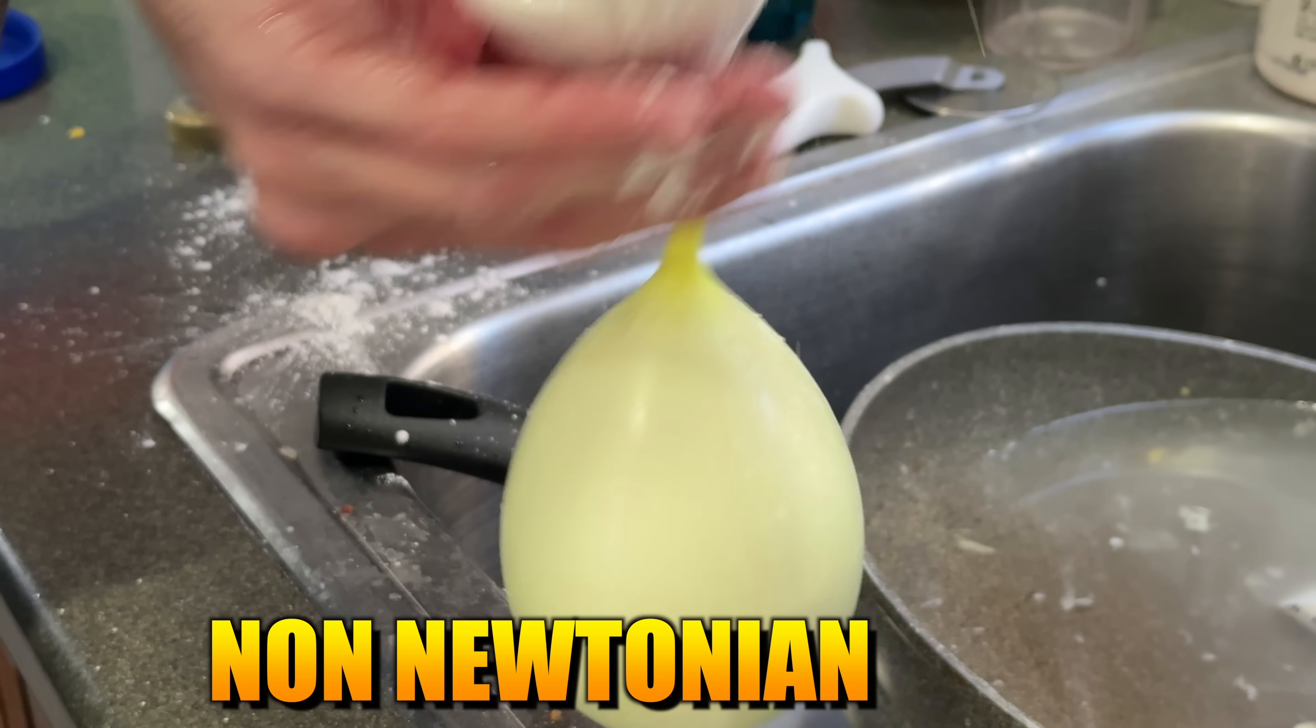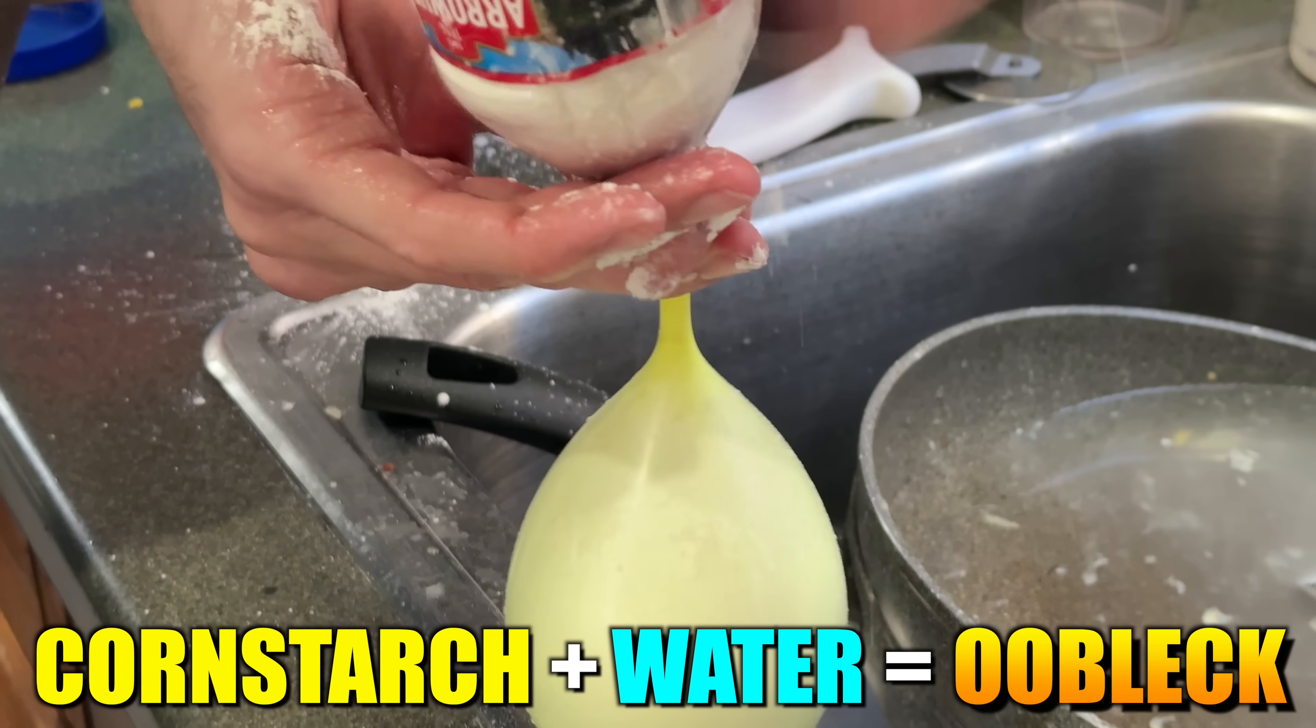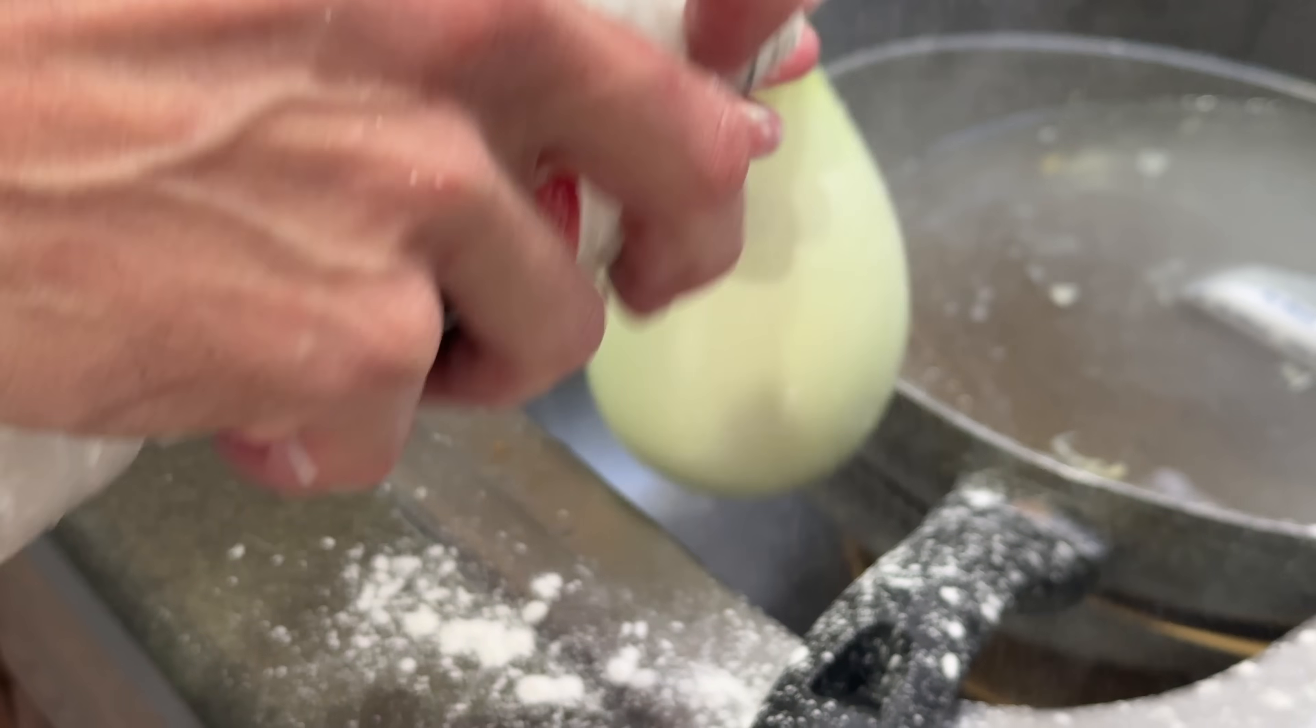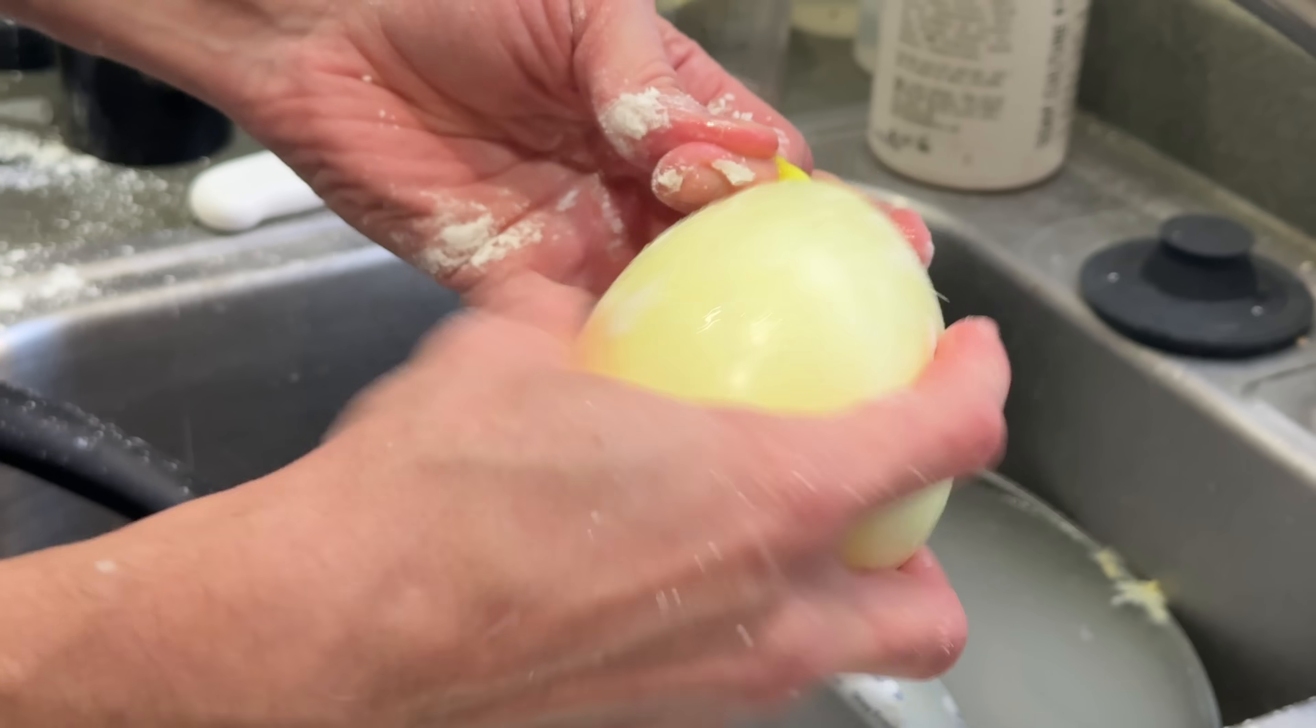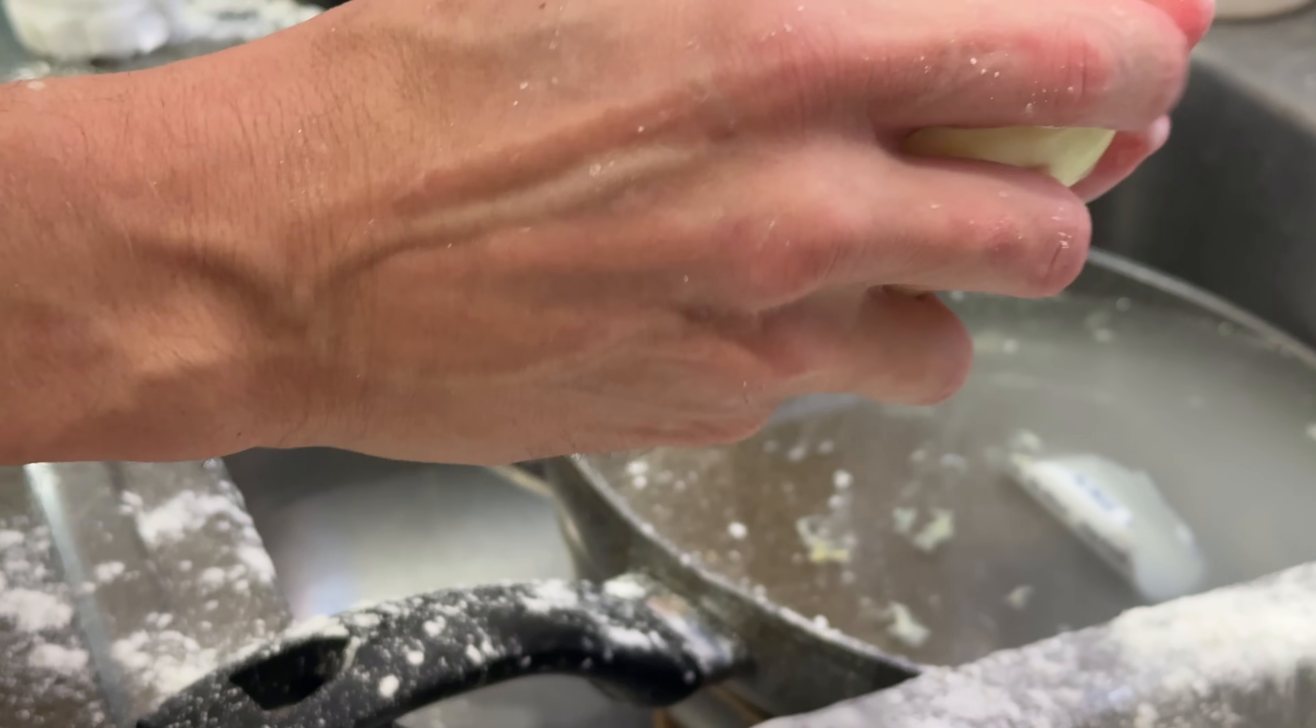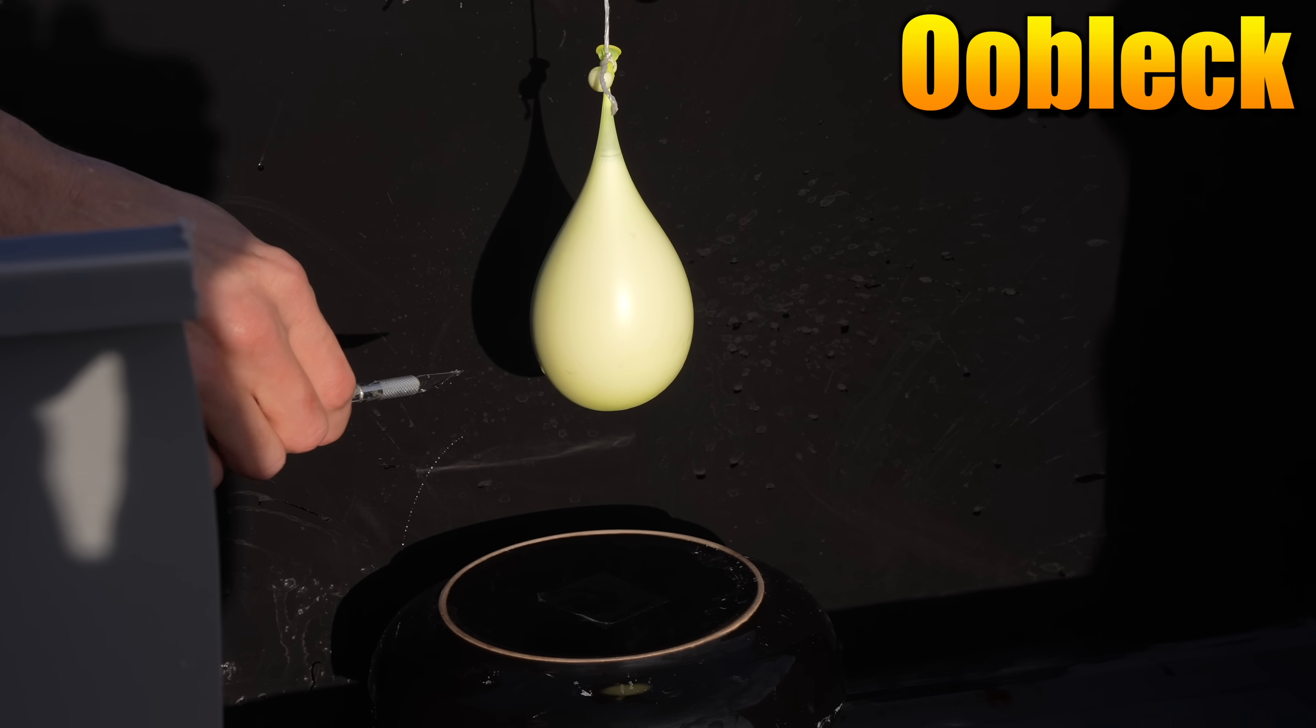All right, the non-Newtonian fluid you were all asking for, cornstarch and water, oobleck, whatever you want to call it, this is tricky to get in a balloon. Getting powder into a balloon is not the easiest thing ever. It was very messy. And then of course you add a little bit of water, mix it up in the balloon, but like it's hard to squish in the balloon. As soon as it starts to mix together, it gets hard to mix together because it's acting like oobleck. You can't squish it very well. Three, two, one.